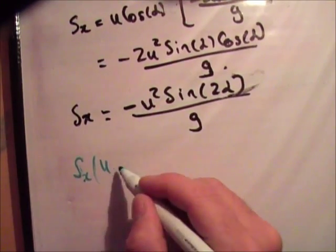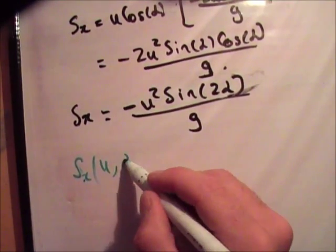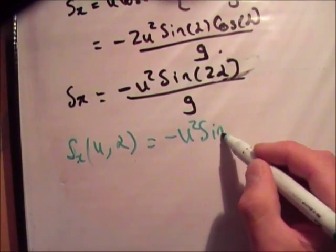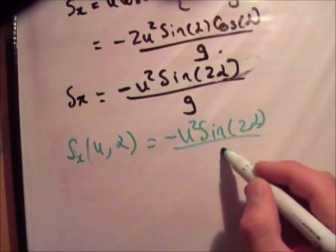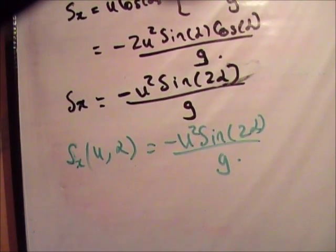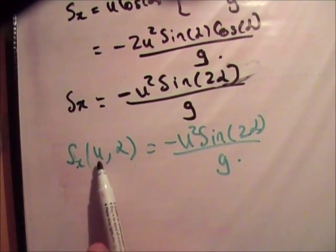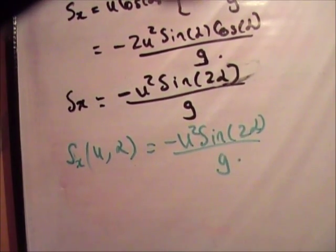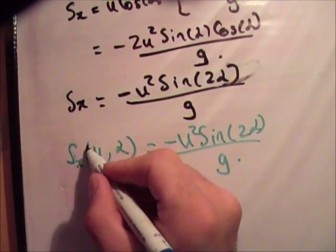If that doesn't make any sense to you, look at my video on functions. Now, all that means is the ingredients for the distance are u and alpha, the only thing it depends on are u and alpha. g is a constant, so that doesn't matter, and sine is just a function, so it doesn't matter. That's a function.